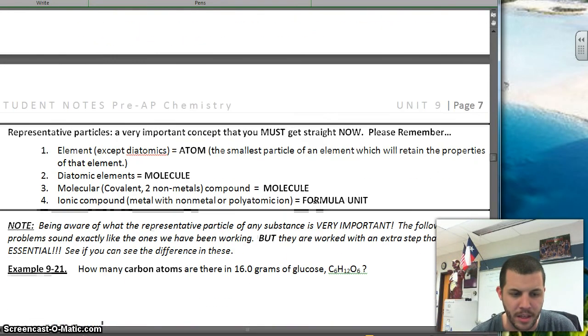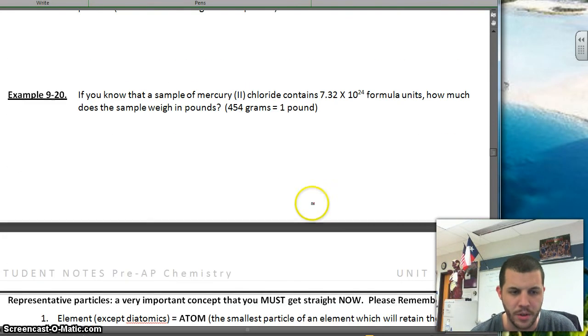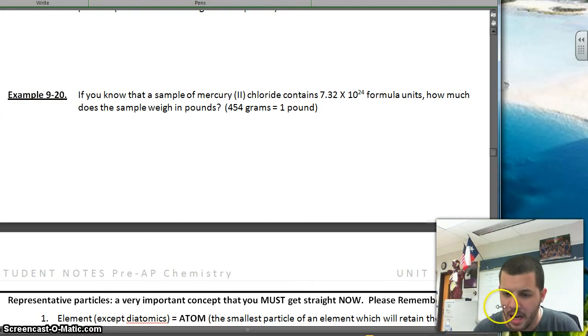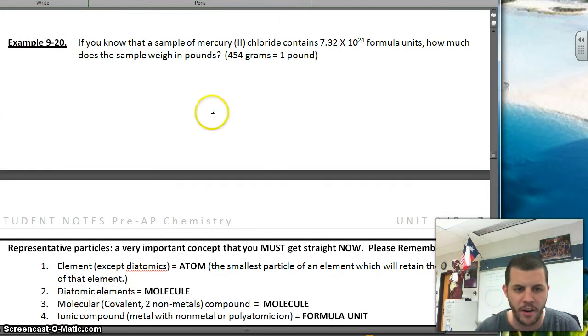So let's see if we can find something a little trickier here. Let's take a look. This one is, this many formula units of mercury two chloride. How much does that weigh in pounds? So all we're doing is we're just tricking it up a little bit. Not too bad though. Okay, so we still want to start off with 7.32 times 10 to the 24 formula units of mercury two chloride, HgCl2.